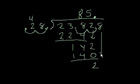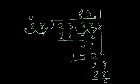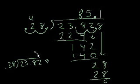Now I just bring down the 8. 28 goes into 28 exactly one time. 1 times 28 is 28. Remainder 0. Done. So 28 goes into 2,382.8 85.1 times. Or you could say 0.28 goes into 23.828 85.1 times.